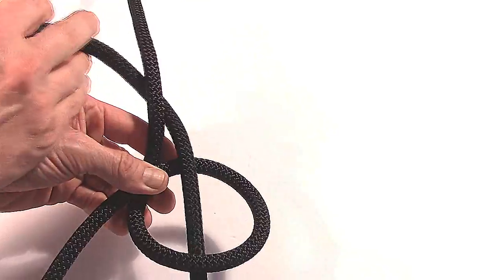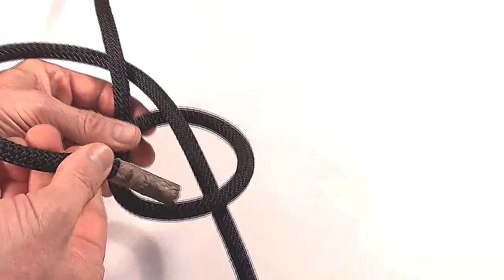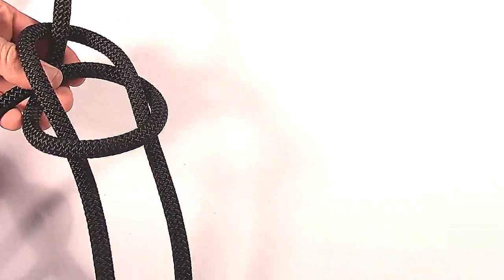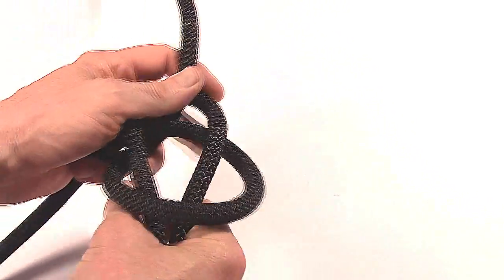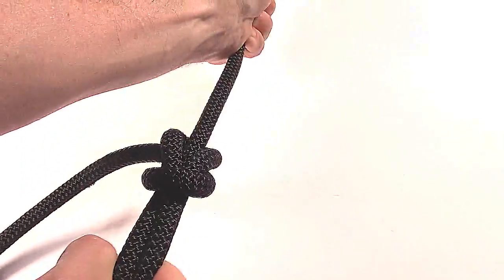The bowline knot, also known as the king knot, is an ancient and simple knot used to form a fixed loop at the end of a rope. The fixed loop will not increase or decrease in size with tension.